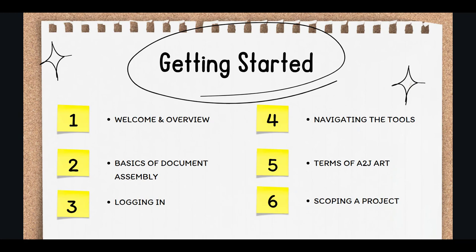Then I'll dive into the basics of document assembly — what even is it and how do the different parts work together? Part 3 covers accessing A2J Author: who can get an account and how do they sign up?